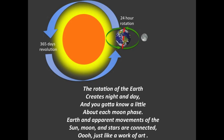The rotation of the earth creates night and day, and you gotta know a little about each moon phase. Earth and apparent movements of the sun, moon, and stars are connected — just like a work of art.